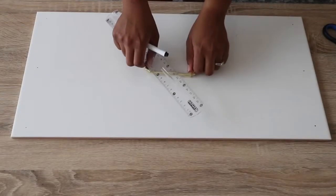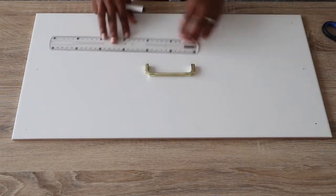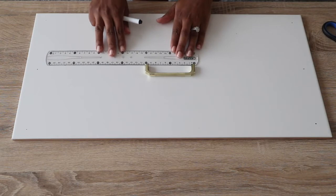So halfway is 15 centimeters and the handle was 10 centimeters, so the five centimeter mark would have to be in the middle. I hope that makes sense.